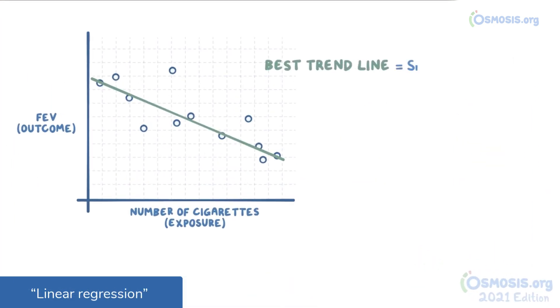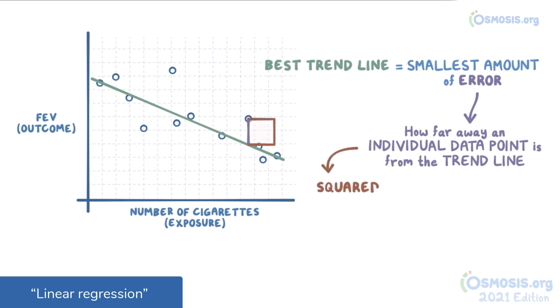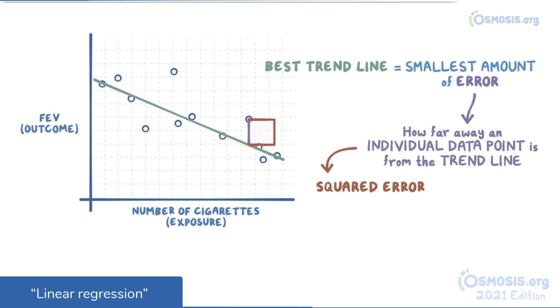The best trend line is the one with the smallest amount of error, which is a measurement of how far away an individual data point is from the trend line. Usually we look at the squared error, which is the distance between the data point and the line squared.